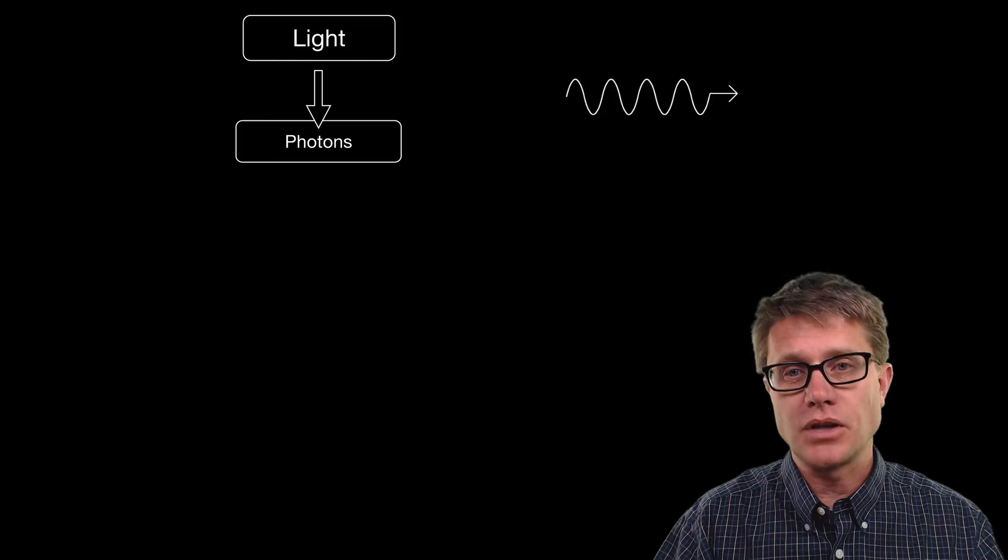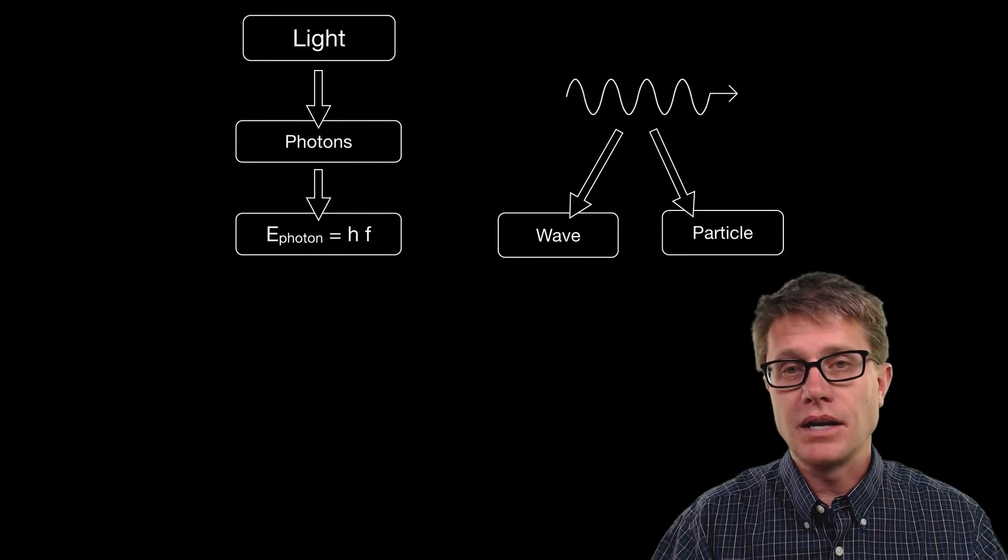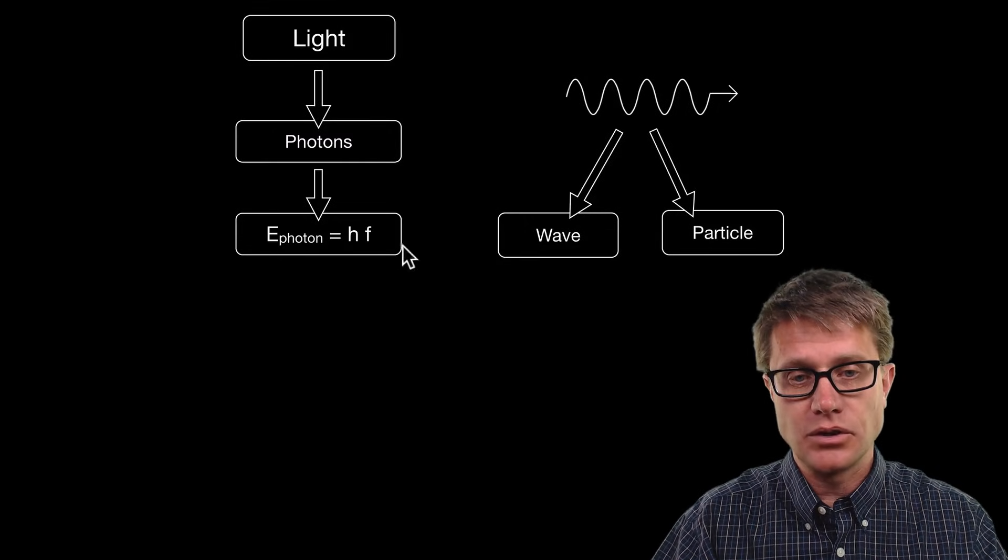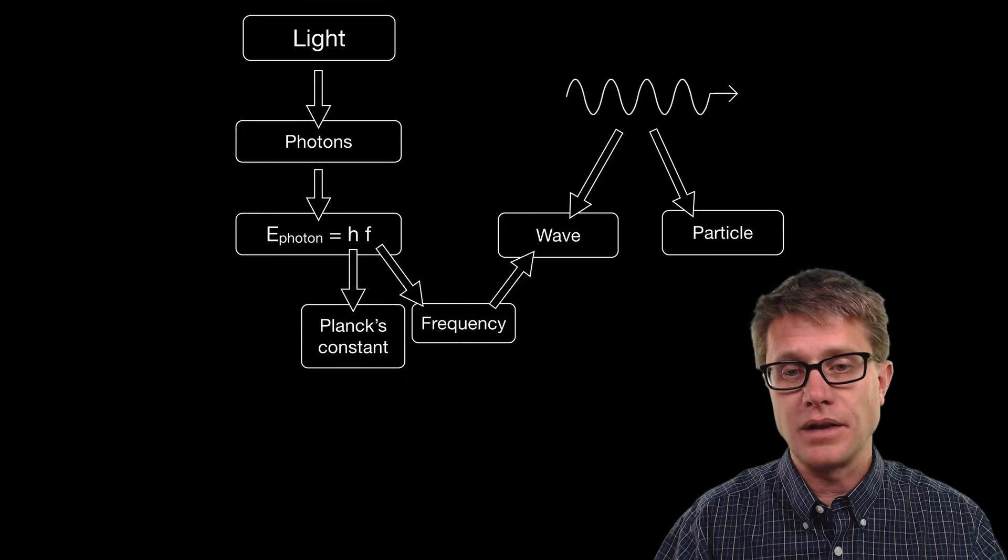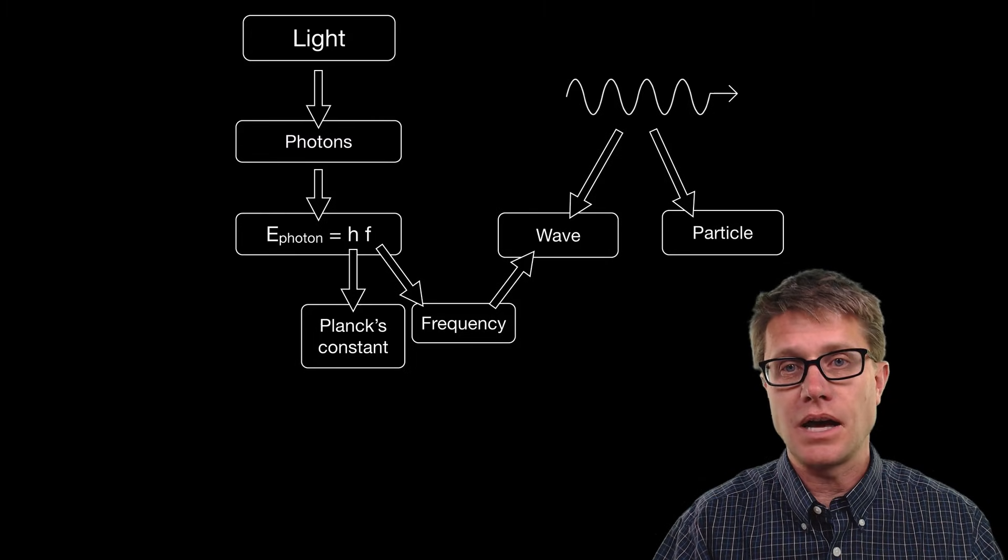And so light is a photon or travels as photons. And those photons can be both waves and particles. And Einstein showed that the amount of energy in a photon is equal to h, and h is equal to Planck's constant times the frequency of the light. So as you increase the frequency you are going to increase the amount of energy that that photon has.